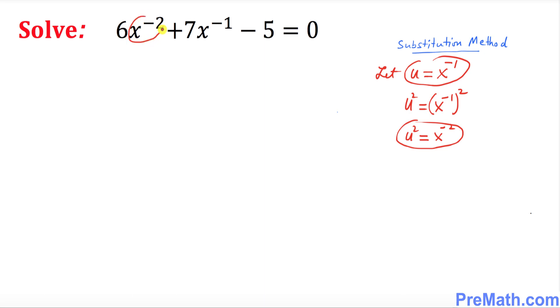And over here we're going to look at x power negative 2 and x power negative 1. So let's go ahead and substitute. So this becomes 6u power 2 plus 7u minus 5 equal to 0. Now you can see this is a quadratic equation with u variables. Let's go ahead and factor that one out first.